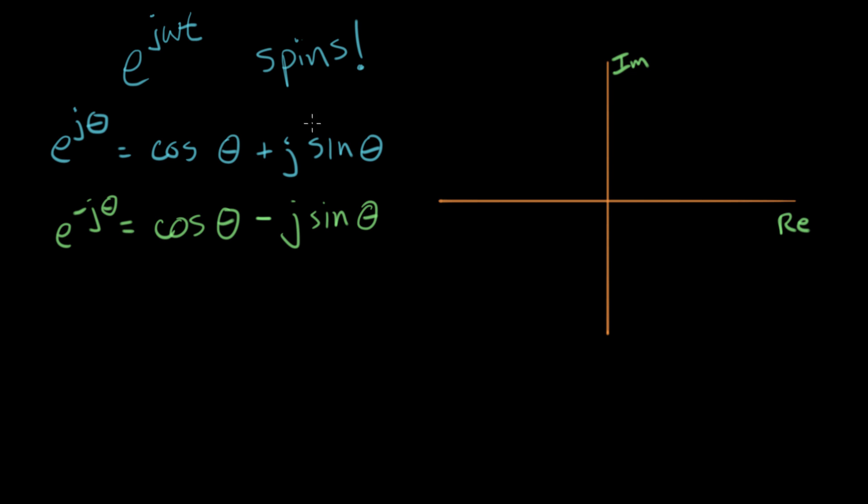Now we remember that j is the variable that we use for the imaginary unit. j squared is equal to minus one, and we use that in electrical engineering instead of i.